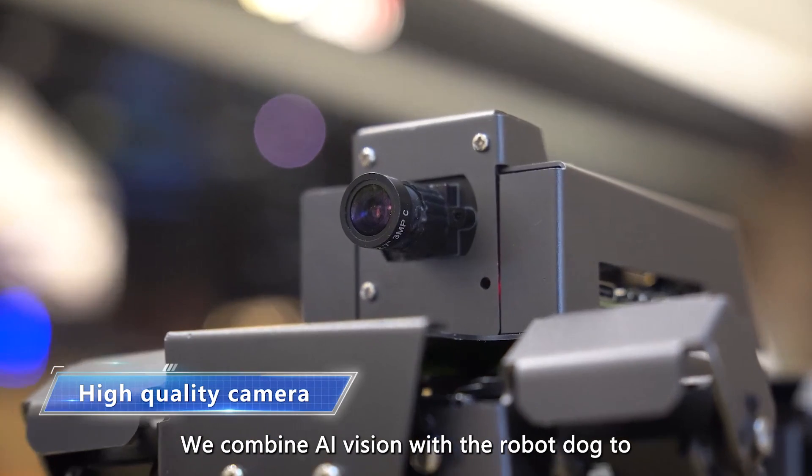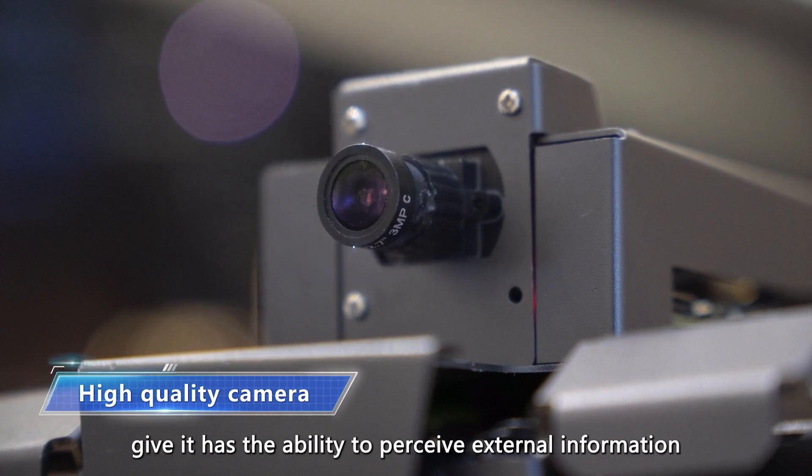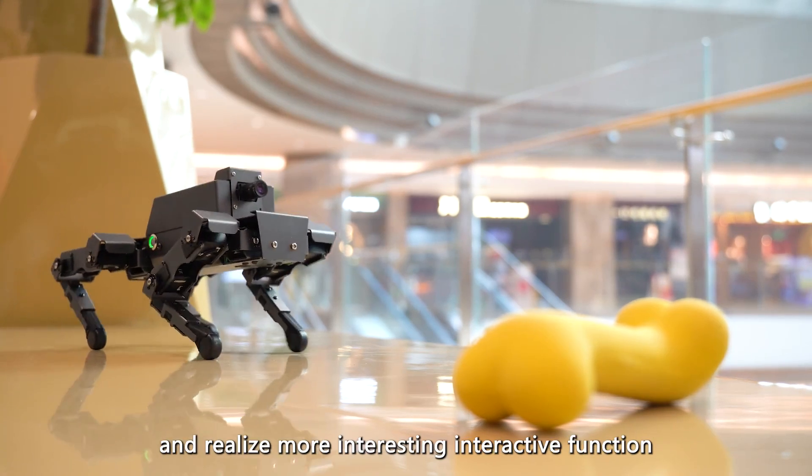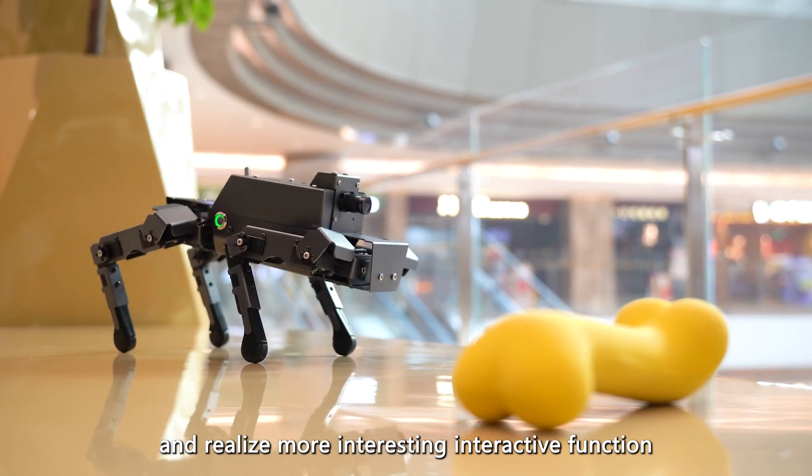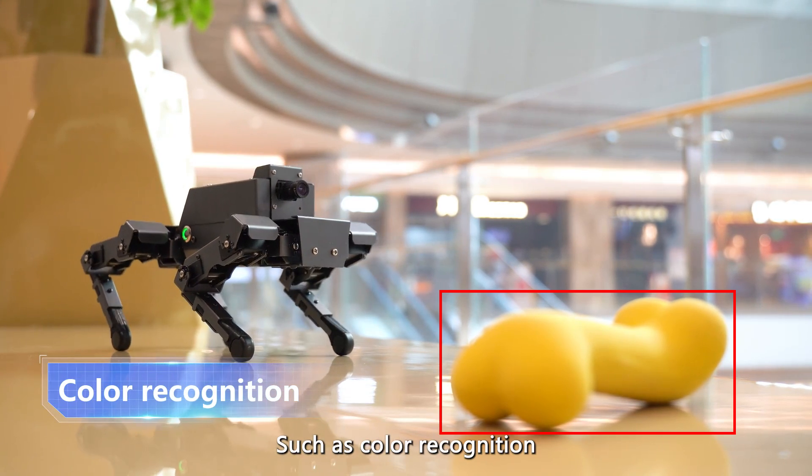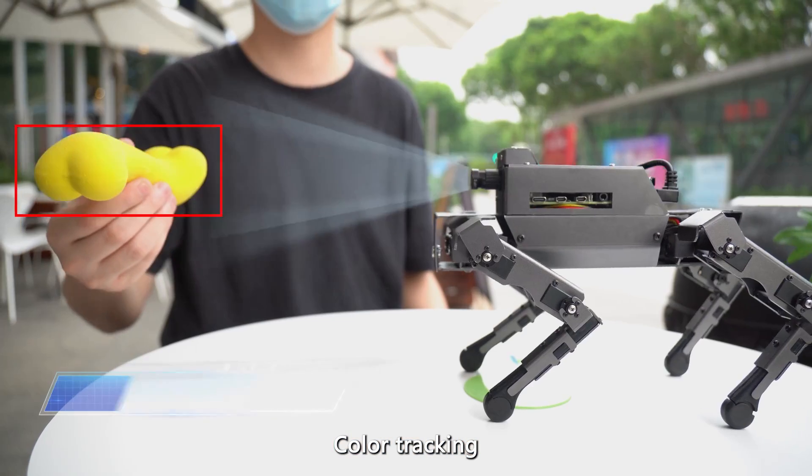We combine AI Vision with the robot dog to give it the ability to perceive external information and realize more interesting interactive functions, such as color recognition and color tracking.